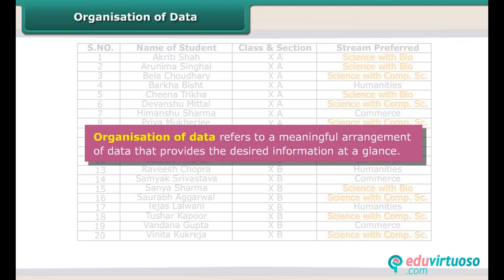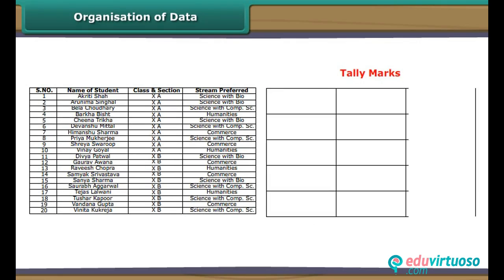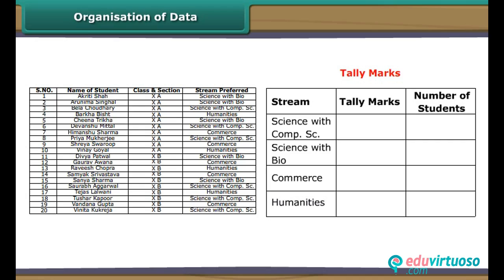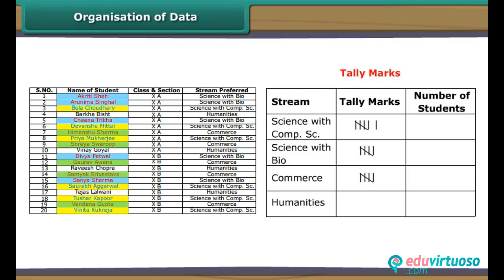Organisation of data refers to a meaningful arrangement of data that provides the desired information at a glance. We use tally marks to organise data. Consider the data collected by Sheetal on the stream preferences of class 10 students. Make three columns: streams, tally marks, and number of students. Specify all available streams under streams one by one. Under tally marks, denote a student with a preference for a particular stream by a tally mark against that stream. Indicate every fifth student preferring a particular stream by a slanting line crossing the previous four tally marks.